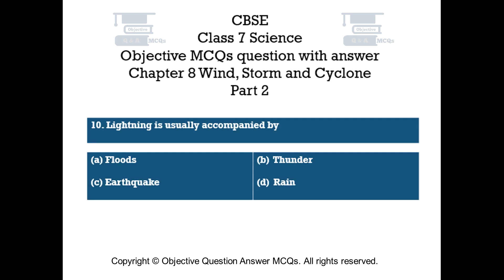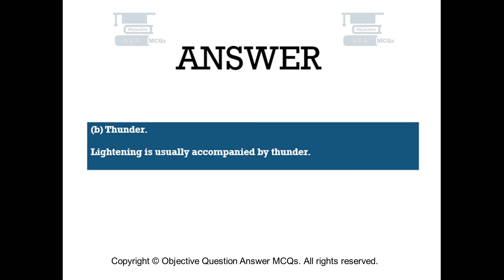Question number 10. Lightning is usually accompanied by — Option A: floods. Option B: thunder. Option C: earthquake. Option D: rain. The right answer is Option B: thunder. Lightning is usually accompanied by thunder.